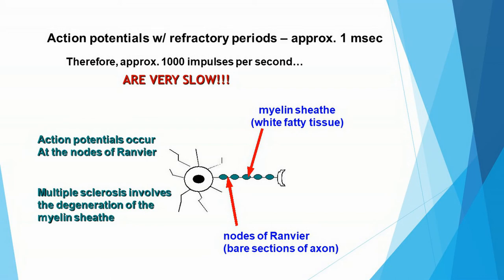Action potentials occur at the nodes of Ranvier for myelinated axons. What you may not know is that multiple sclerosis involves degeneration of the myelin sheath. It should make sense that if the myelin sheath is degenerating, some neural impulses are slowed down, and the first symptoms of multiple sclerosis involve uncoordinated motor movement.